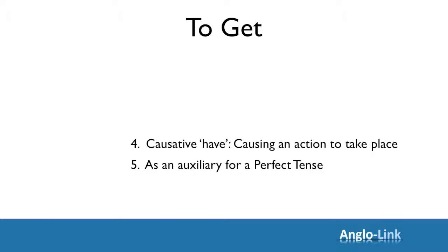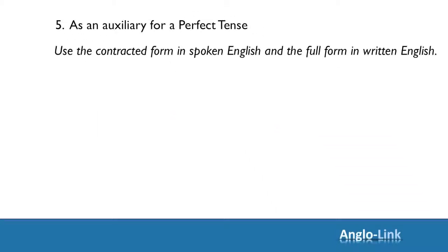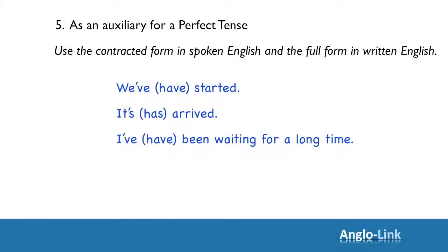Right then. Let's move on to the verb TO HAVE as an auxiliary for a perfect tense. In this case, use the contracted form in spoken English and the full form in written English. Let's look at the examples. We've started. It's arrived. I've been waiting for a long time. They'd seen it before.